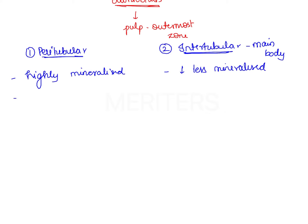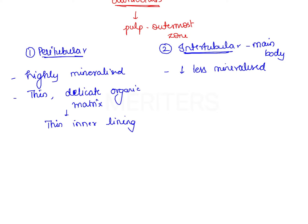Peritubular dentin consists of a thin and delicate organic matrix which forms a very thin inner lining in the dentinal tubules. This inner organic lining is given the term lamina limitans — this is the term given in the options.